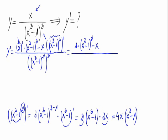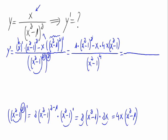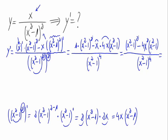So let's write this derivative in the numerator. We have 1 times x squared minus 1, minus x times 4x, which gives 4x squared times x squared minus 1, all divided by x squared minus 1 to the fourth. The denominator comes from x squared minus 1 squared squared, giving us a power raised to another power: 2 times 2 equals 4.